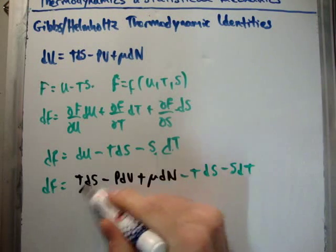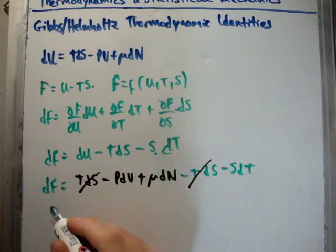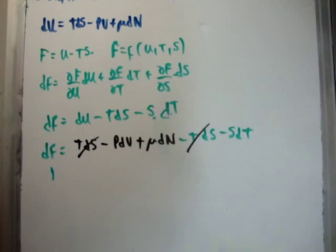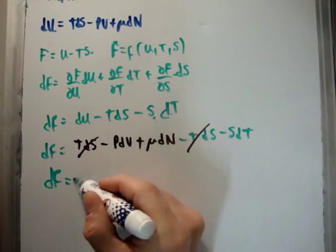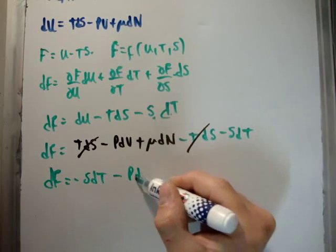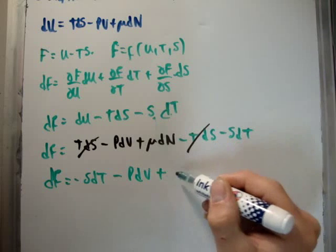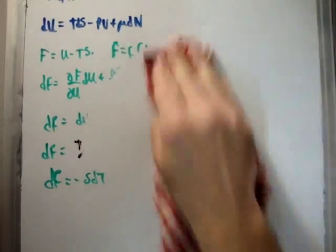Okay, so we can see pretty straightforward that we have this TdS term cancelling here. And that leaves our final thermodynamic identity for the Helmholtz free energy. That is the thermodynamic identity for the Helmholtz free energy.